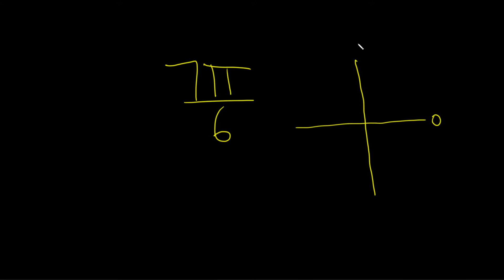So here is 0, here is π over 2, here is π, and then here is 3π over 2.